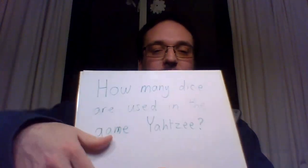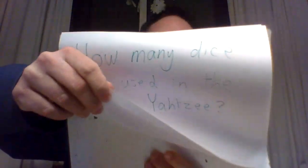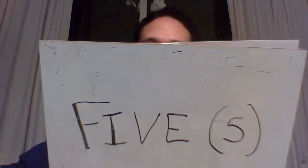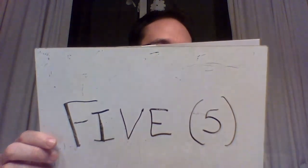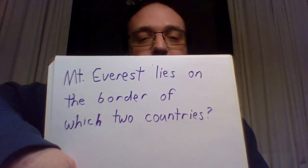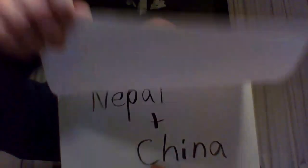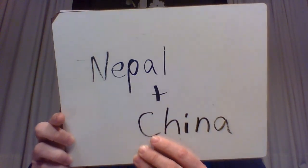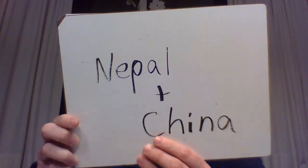That's our five questions, and now we're going to go through the answers. How many dice are used in the game of Yahtzee? Five — there are five dice used in the game of Yahtzee. Number two: Mount Everest lies on the border of which two countries? Nepal and China.